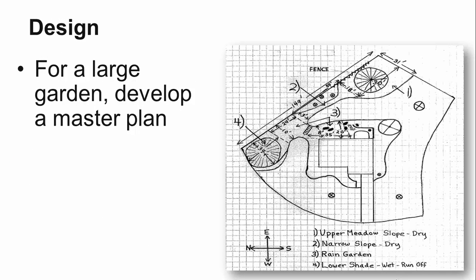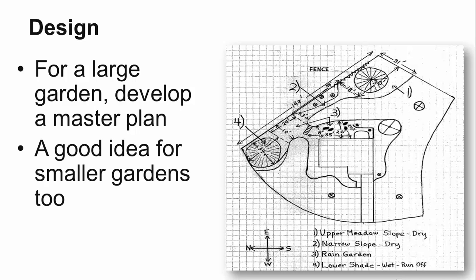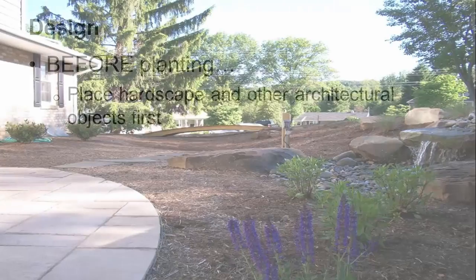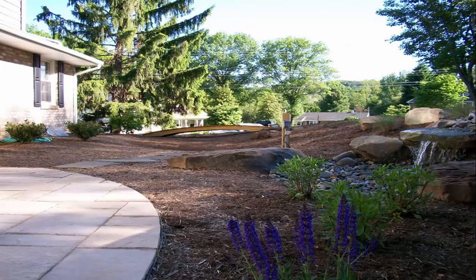The actual design should be done simultaneously while selecting the desired plant species. If the proper plants for the growing site are not selected, then the overall plan falls apart. For a large garden, develop a master plan—though this is also good for smaller gardens. Place the hardscapes and other architectural objects first, as this allows for appropriate plant placement around these permanent structures.